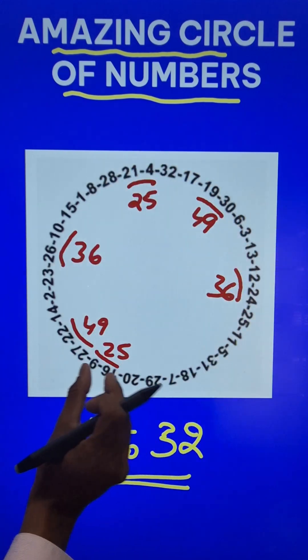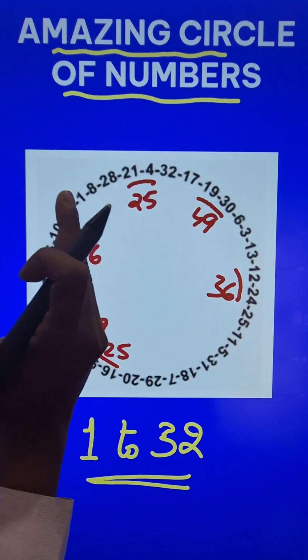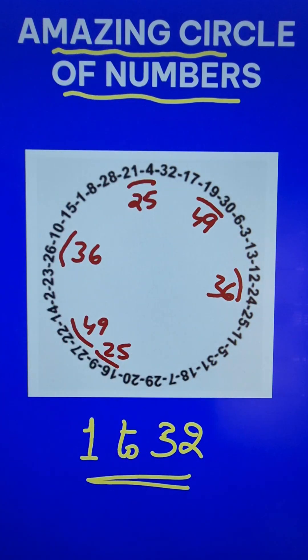The sum of any two consecutive numbers will always be a perfect square. Isn't that an amazing property of numbers?